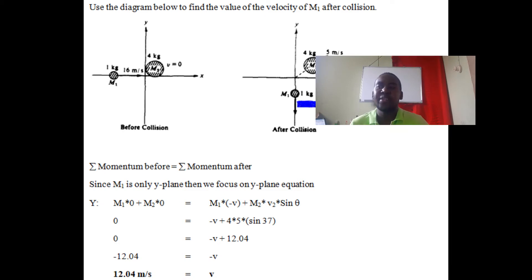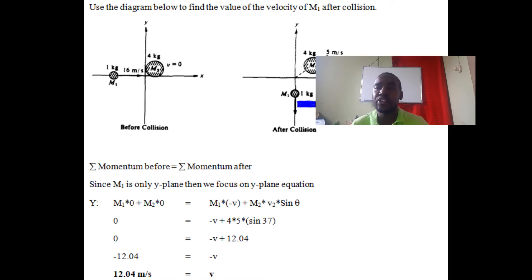We know that momentum before equals momentum after. In the y plane, m1 has no y-component because it's moving horizontally at 16 m/s, so m1's y-momentum is zero. m2 was at rest, so it also has zero velocity in the y plane. Therefore, momentum before is zero. After the collision, m1 is going vertically downward, so we use a negative v, and v is unknown.